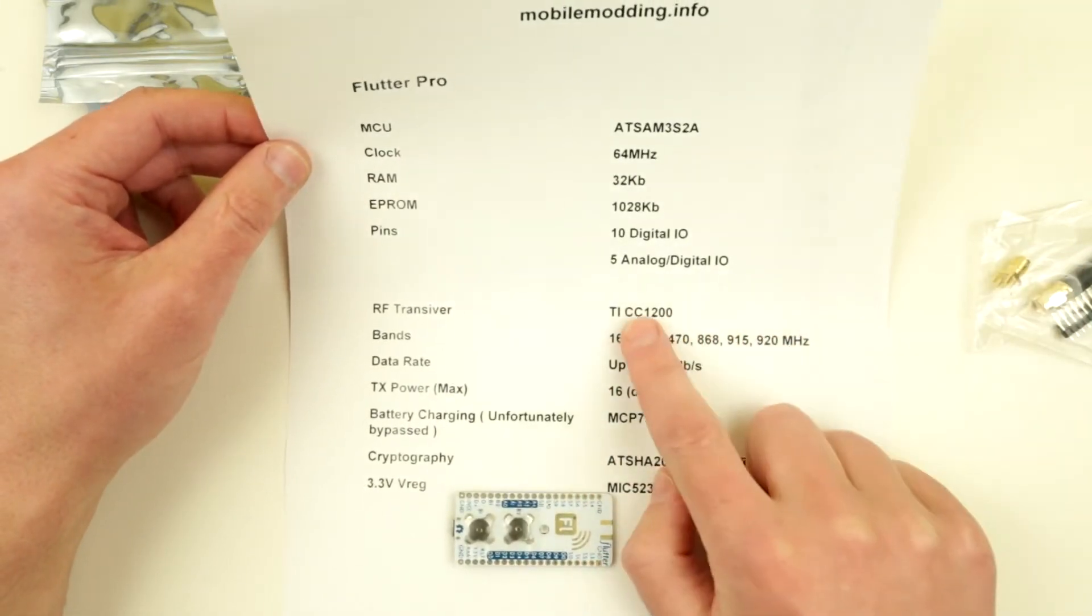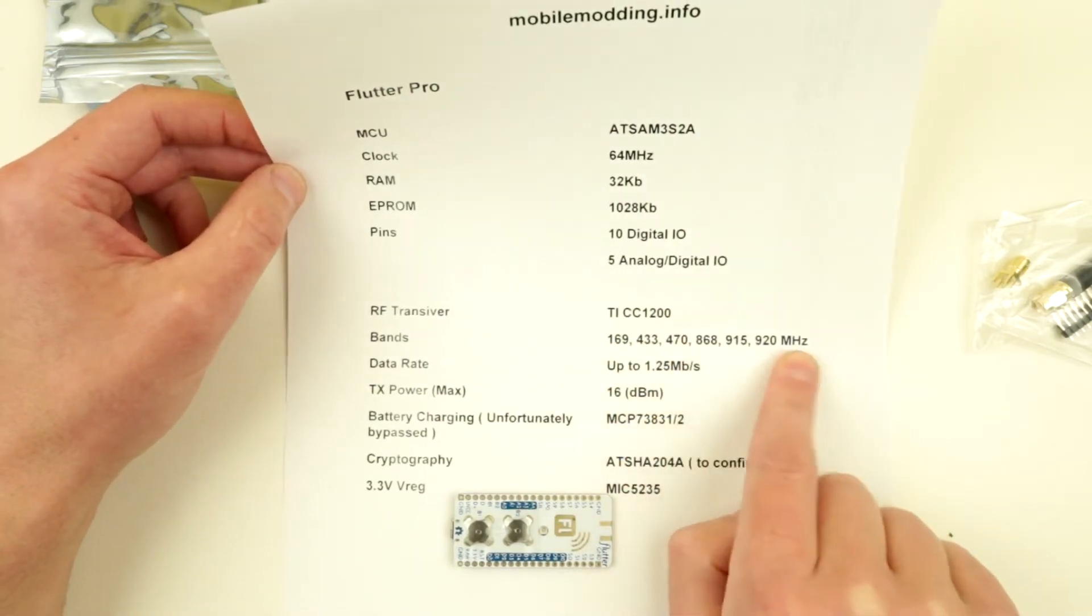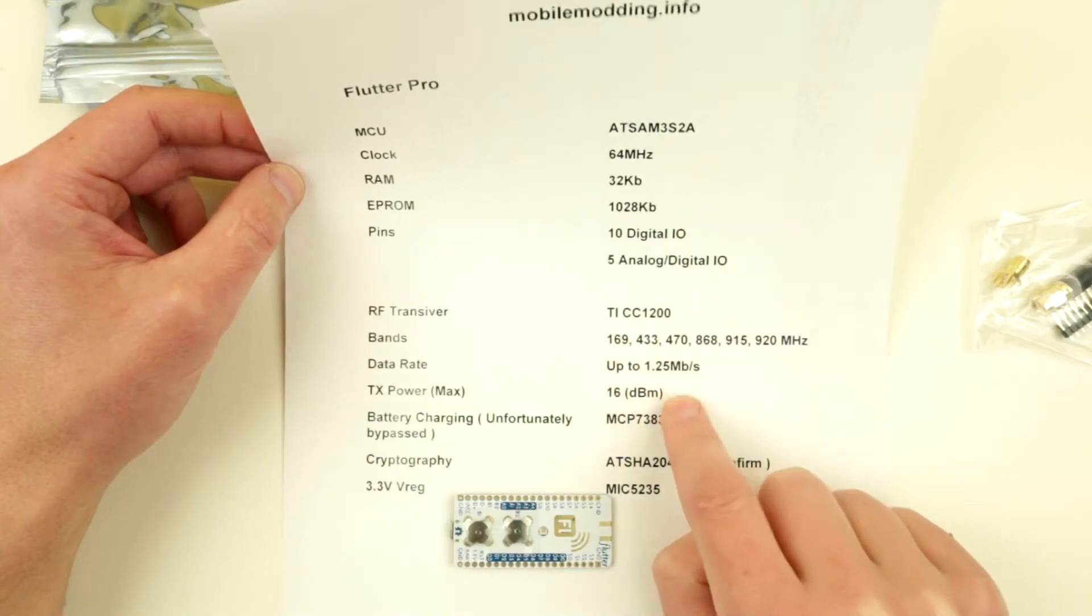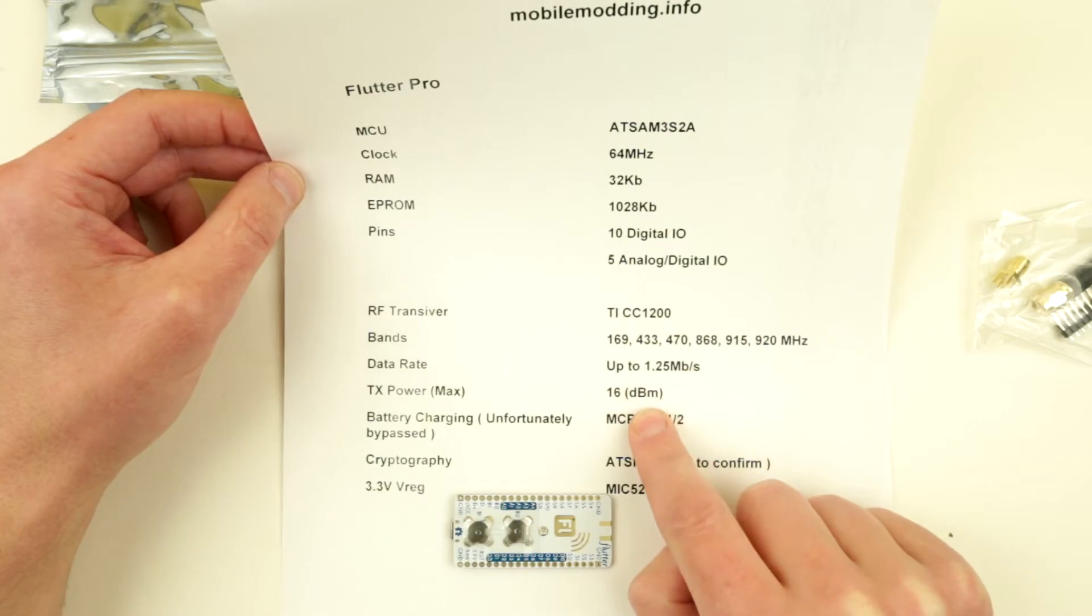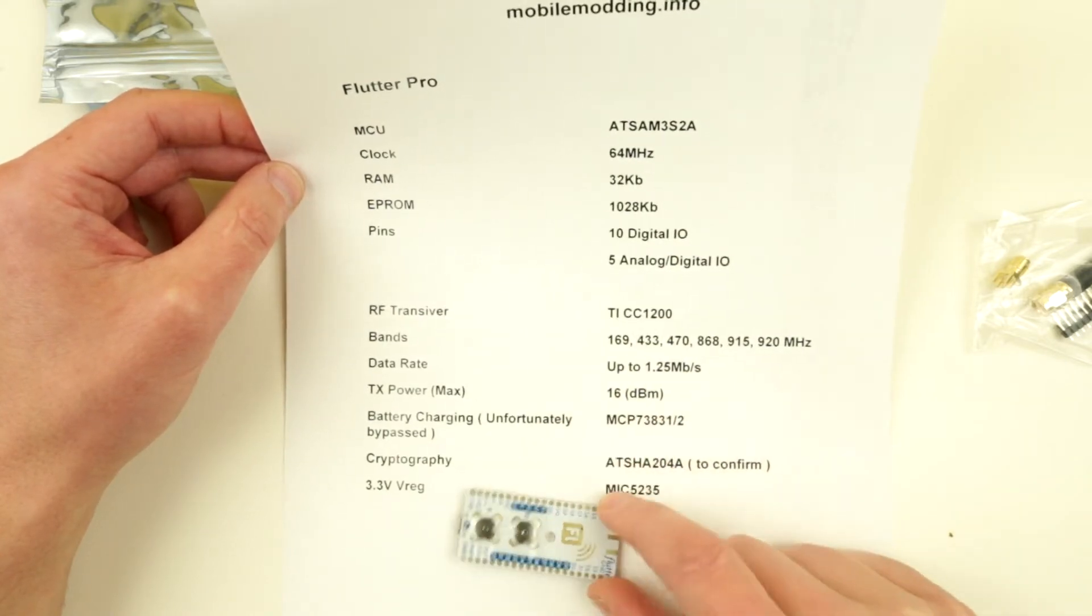The RF transceiver is Texas Instruments CC1200. It works on all these bands. I think it can support some additional bands. It can run up to 125 megabits per second and supports 16 decibel transmit power.